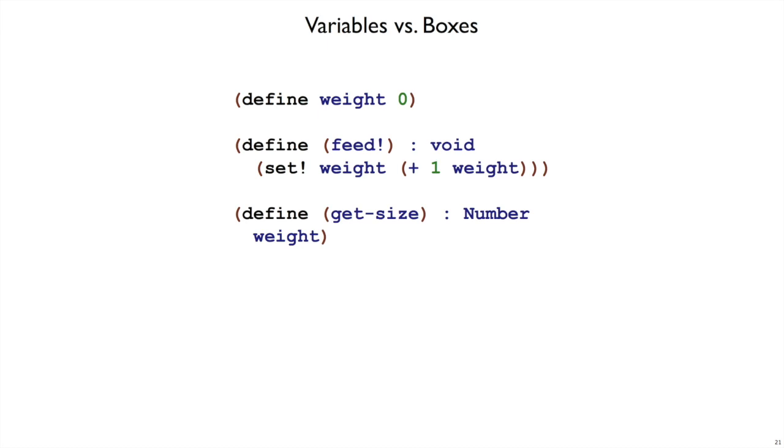I've introduced state using variables. So here we have a variable weight, and the point of a stateful variable is that the value associated to the variable can change. If weight represents a single fish, we can have a feed function that changes the value of that variable.